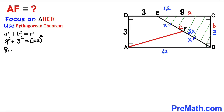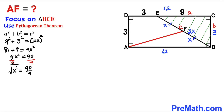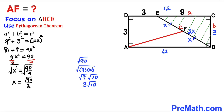Simplifying: 81 plus 9 equals 4X², so 4X² = 90. Dividing both sides by 4 gives X² = 90/4. Taking the square root: X = √90 / 2. Since √90 simplifies to 3√10, our X value turns out to be 3√10 divided by 2.